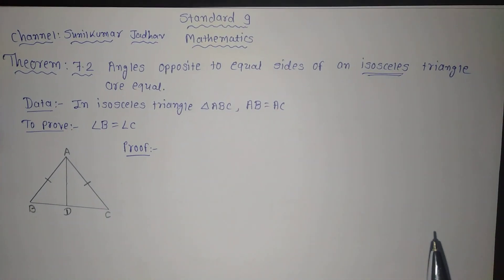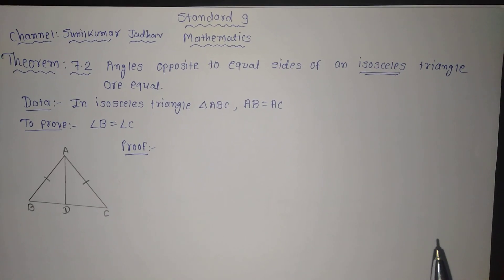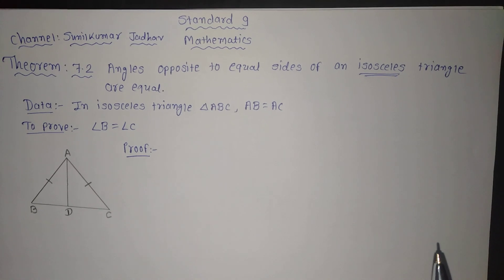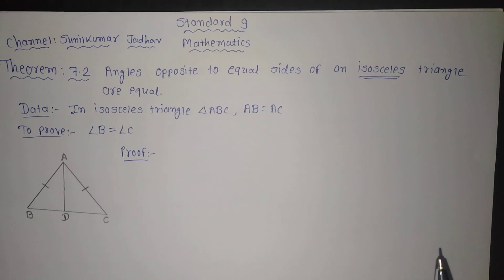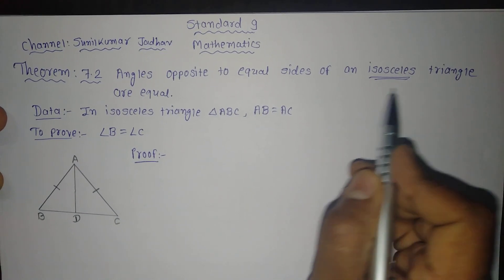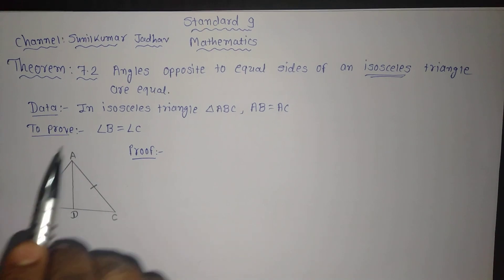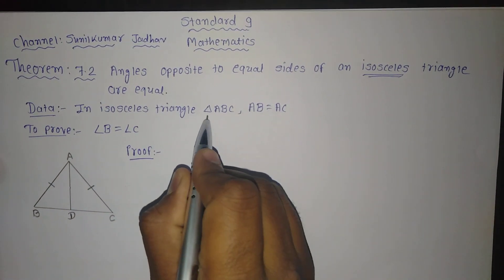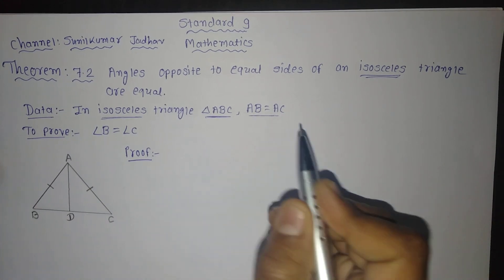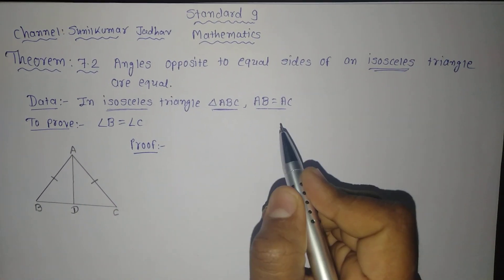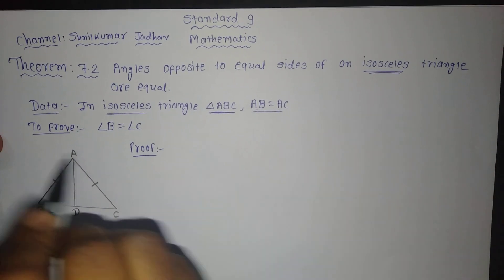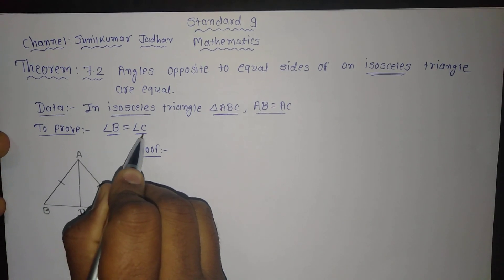We know what is the meaning of isosceles triangle. An isosceles triangle is such a triangle in which any two sides are of equal measure, or we can say any two sides are congruent — such a triangle is called an isosceles triangle. So we have to prove that angles opposite to equal sides of an isosceles triangle are equal. In isosceles triangle ABC, it is given that AB is equal to AC, and we have to prove that angle B is equal to angle C.